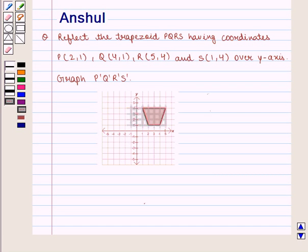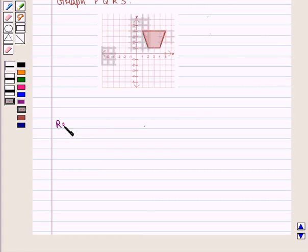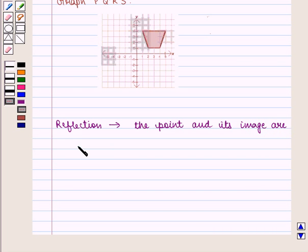Hello and welcome to the session. In this session, we are going to discuss the following question: Reflect the trapezoid PQRS having coordinates P(2,1), Q(4,1), R(5,4) and S(1,4) over the y-axis and graph P'Q'R'S'. We know that in reflection, the point and its image are at the same distance from the line of reflection.